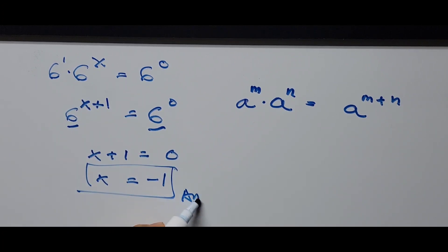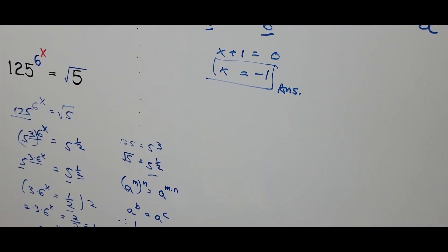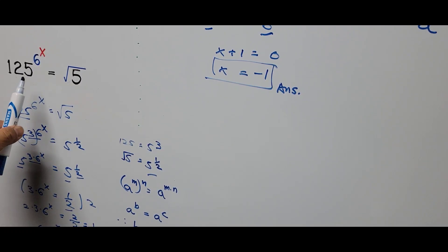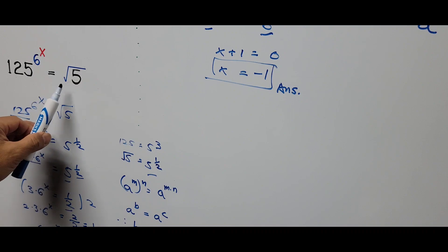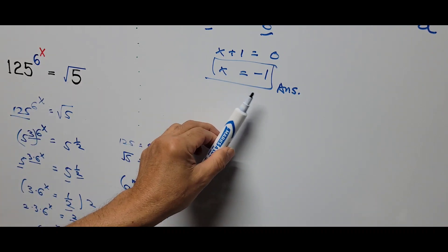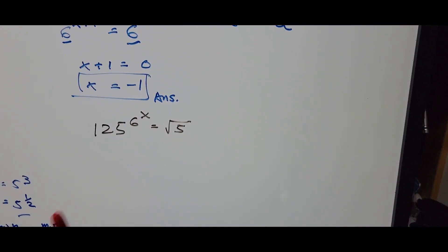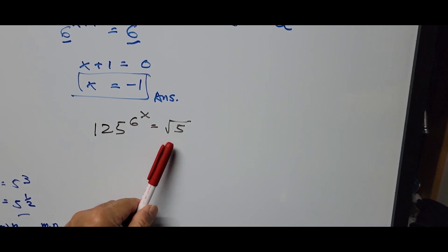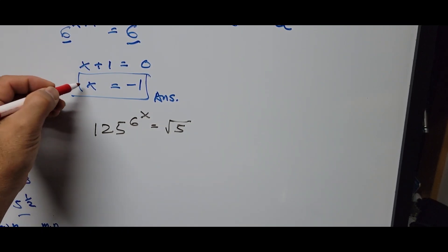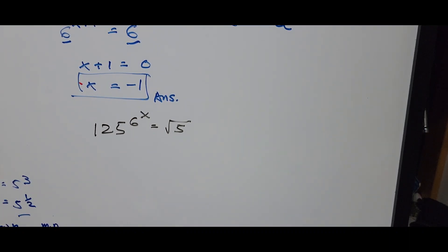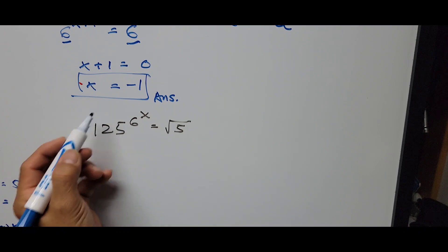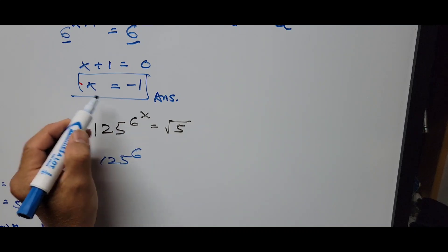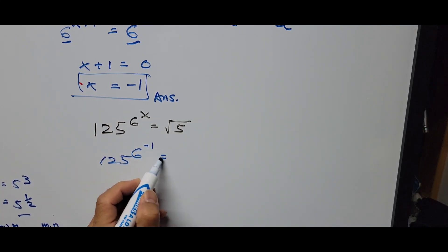So that's the answer: x equals negative 1. To check our solution, we substitute x equals negative 1 back into the original equation: 125 to the 6th power, to the power of x, equals the square root of 5. With x substituted as negative 1, the equation becomes 125 raised to the 6th power, raised to negative 1, equals the square root of 5.